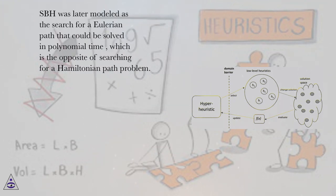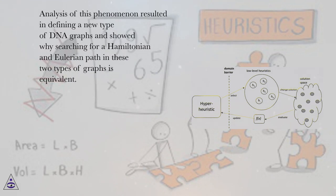SBH was later modeled as the search for a Eulerian path that could be solved in polynomial time, which is the opposite of searching for a Hamiltonian path problem. Analysis of this phenomenon resulted in defining a new type of DNA graphs and showed why searching for a Hamiltonian and Eulerian path in these two types of graphs is equivalent.